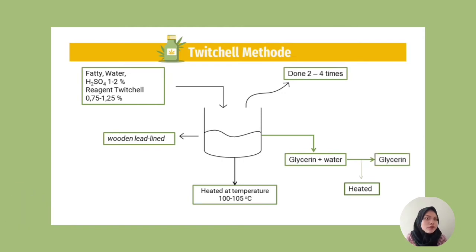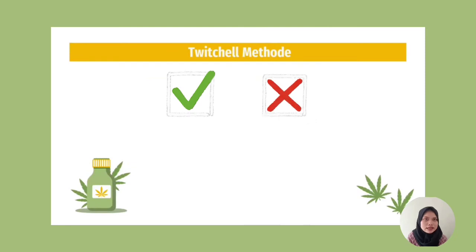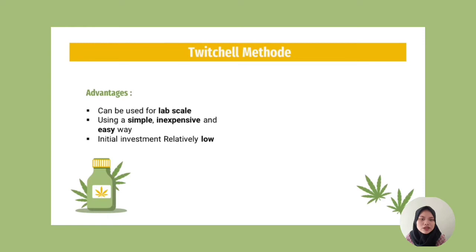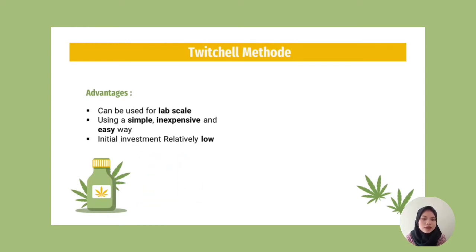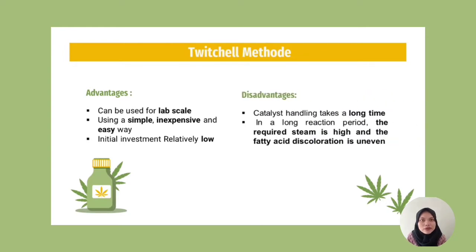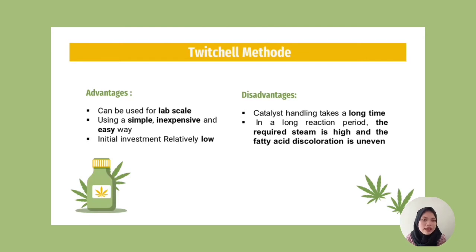Every method has advantages and disadvantages. The advantages of the Twitchell process are: it can be used for lab scale, the process is simple, inexpensive, and easy to operate, and the initial investment is relatively low. The disadvantages are: catalyst handling takes a long time, the reaction period is long, the required steam is high, and fatty acid discoloration is uneven. That's all about the Twitchell method.